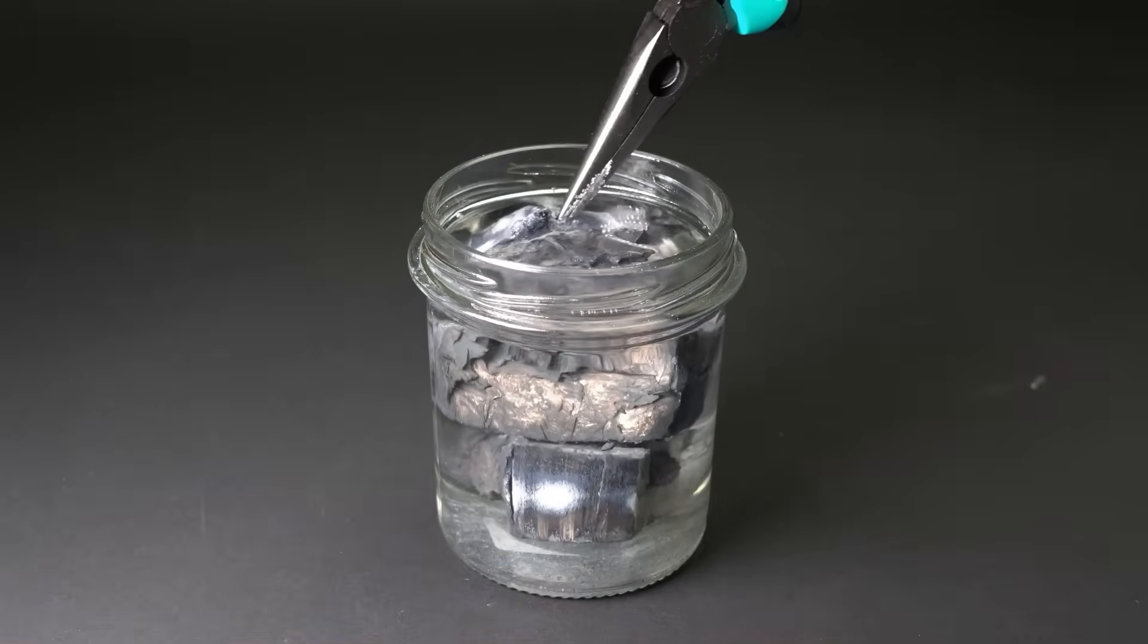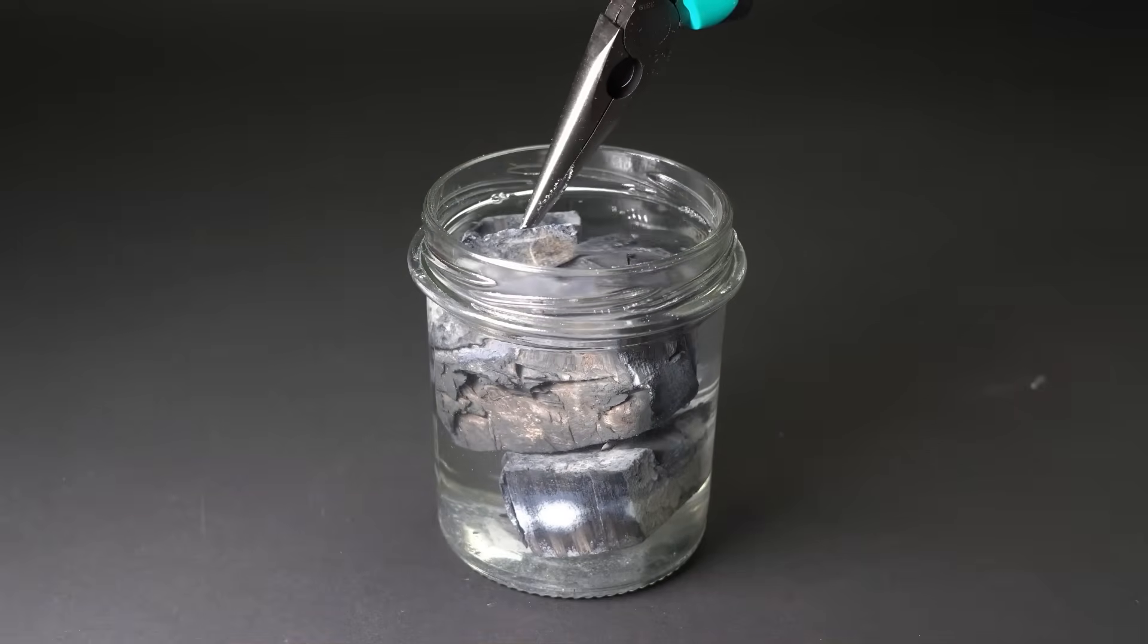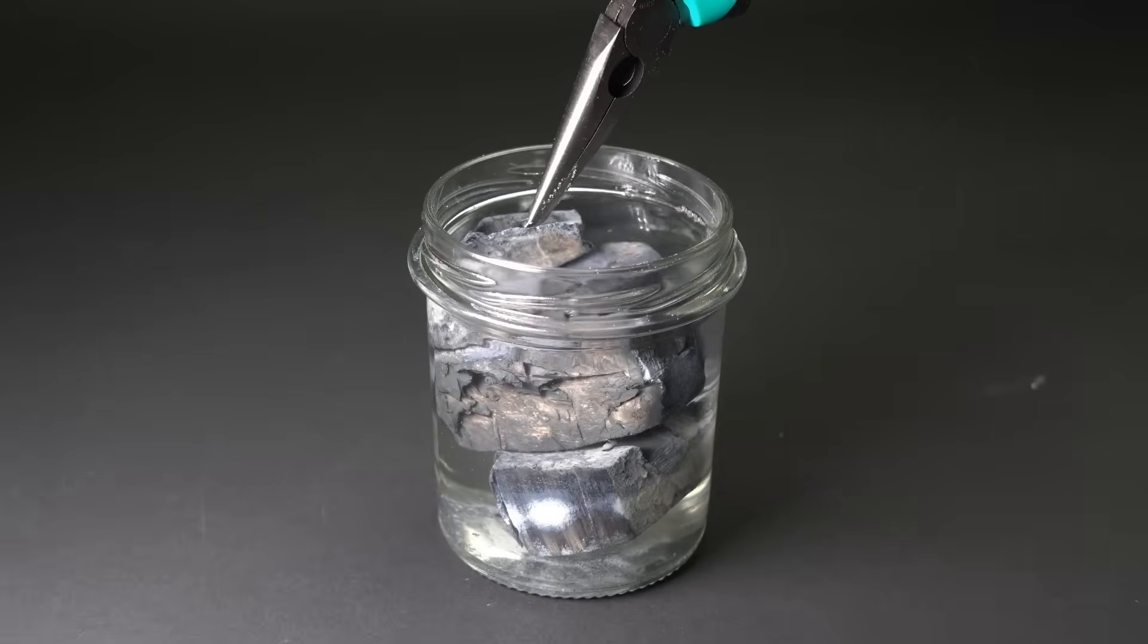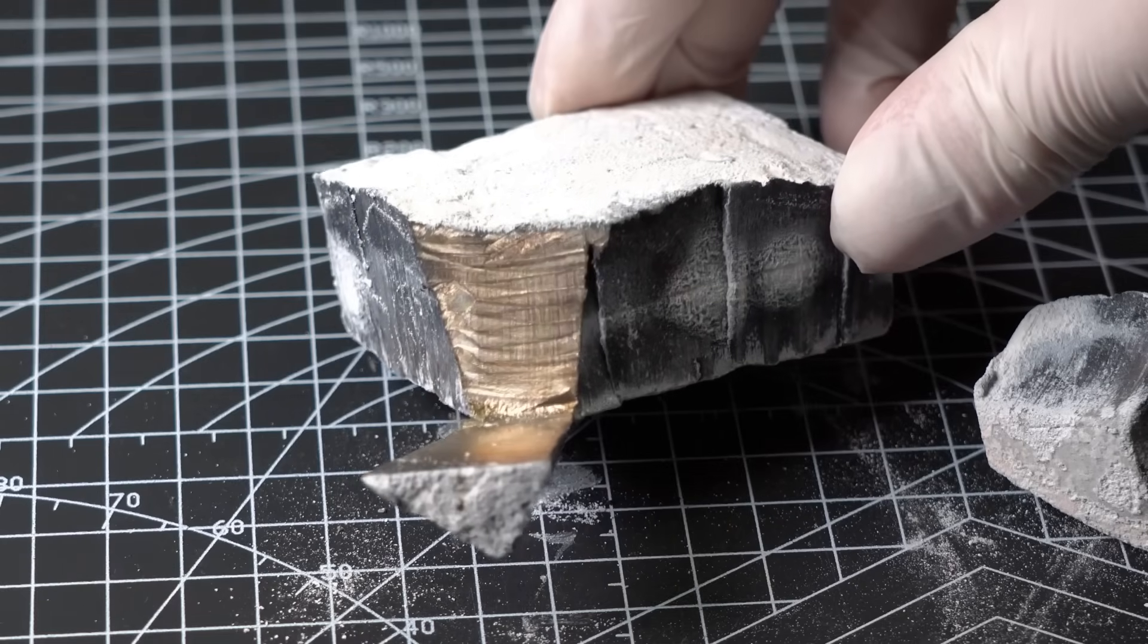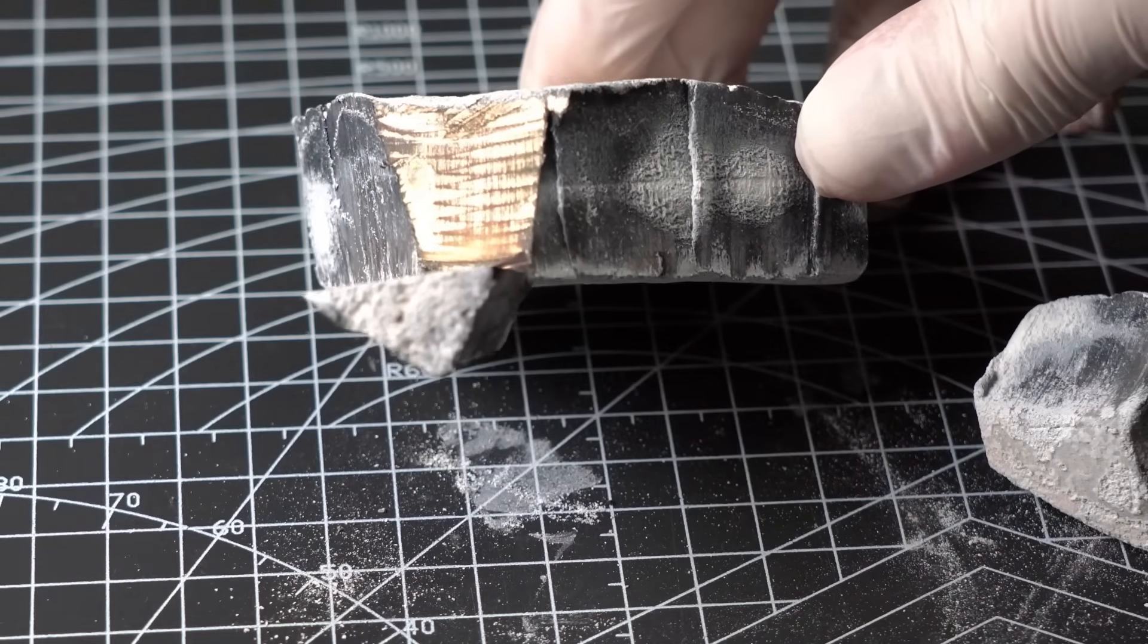So this method of obtaining the metal really does work. But just like with sodium, it's much easier to buy lithium, since producing any significant amount of these metals at home by electrolysis is quite a challenge. It's a bit more expensive than sodium, but still more affordable than potassium. Well, I've finally managed to collect all the alkali metals.